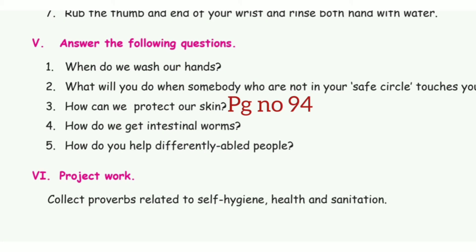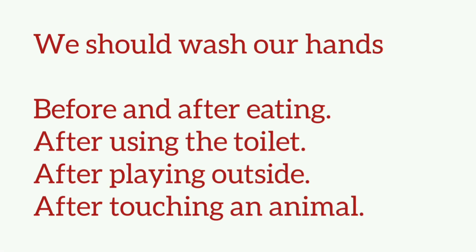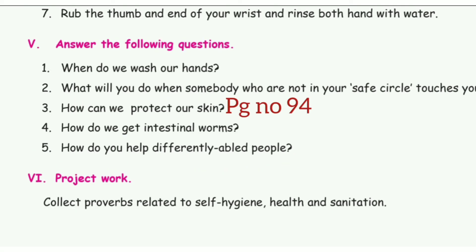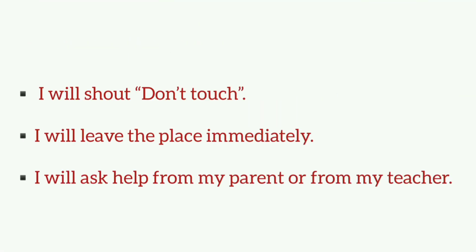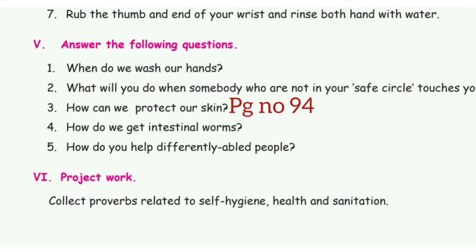Answer the following questions. First: when do we wash our hands? The answer is: we should wash our hands before and after eating, after using the toilet, after playing outside, and after touching an animal. Second: what will you do when somebody not in your safe circle touches you? The answer is: I will shout 'don't touch,' I will leave the place immediately, and I will ask help from my parent or teacher.